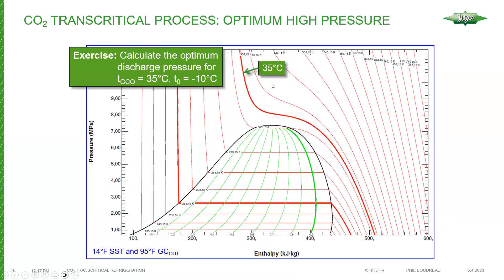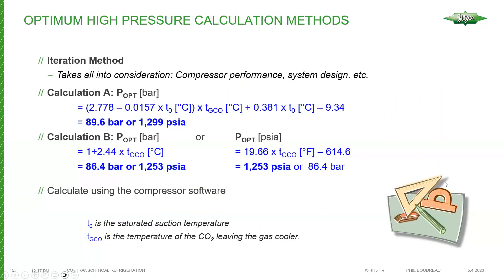Looking at an example with a gas cooler outlet temperature of 95°F (35°C) and an evaporating temperature of -10°C (14°F), we can examine the difference that pressure makes in terms of coefficient of performance. There are different ways of determining optimum pressure. One is the iteration method — the most basic approach is to take a pressure-enthalpy diagram and plot a number of cycles to find where your best COP is.